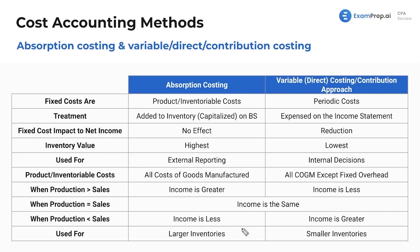Everything else is just an effect of what happens. Under absorption costing, say we're making chairs in a factory. If we have fixed costs, such as $1,000 a month to keep the lights on, those are capitalized to our chairs — our inventory — and we add that to the value of the asset. Whereas under the variable or direct method, we expense those fixed costs. Treatment of fixed costs: capitalized on the balance sheet or expensed on the income statement.